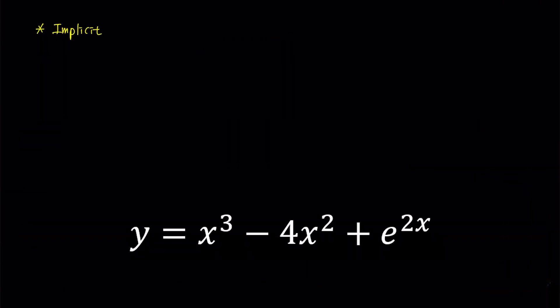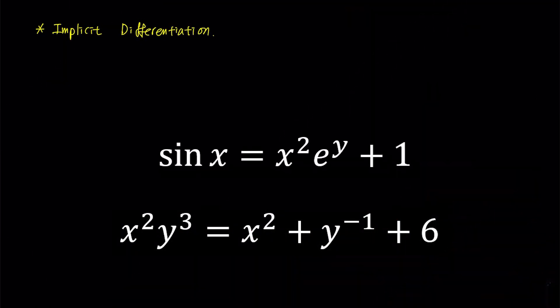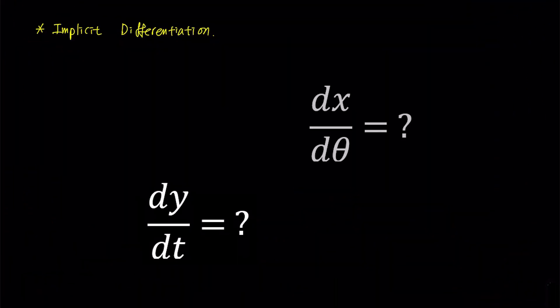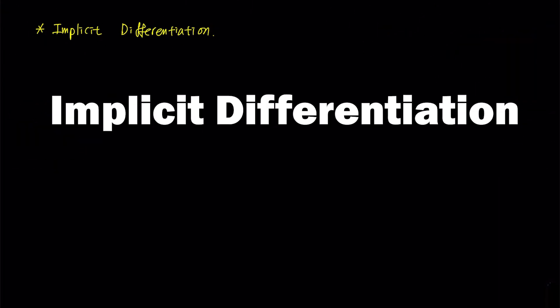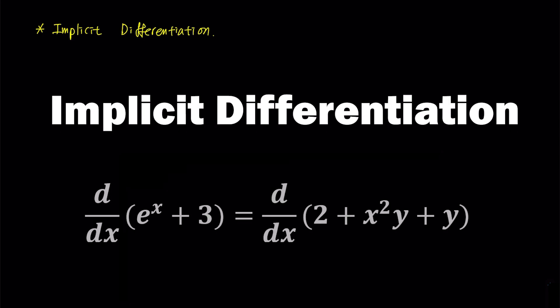Most of the differentiation problems you have solved so far have had a variable y explicitly expressed as a function of x. However, in some cases it can be very difficult to express y in terms of x, and sometimes you need to differentiate using variables other than x and y. A more useful method for solving this type of problem is implicit differentiation. This method is particularly useful when the function cannot be easily expressed in terms of a single variable, or when differentiating both sides of the equation with respect to the variable of interest makes it easier to find the derivative.